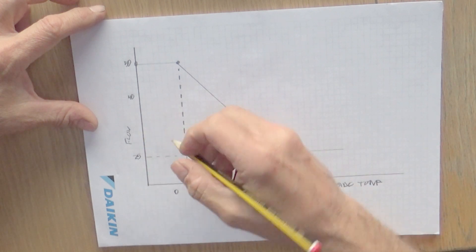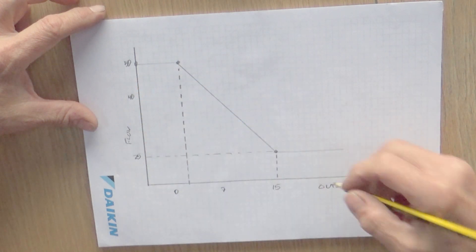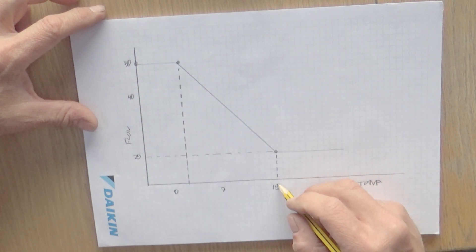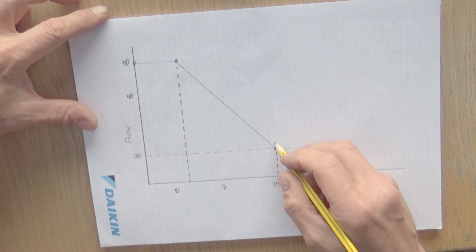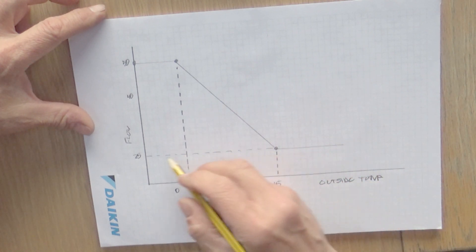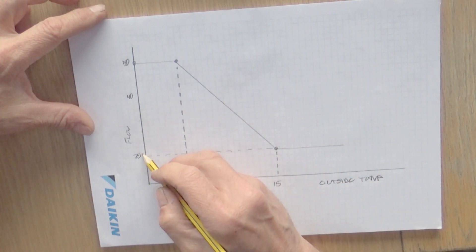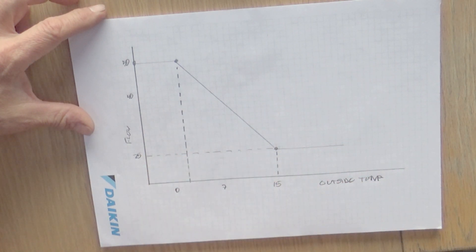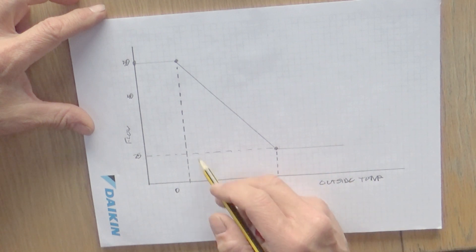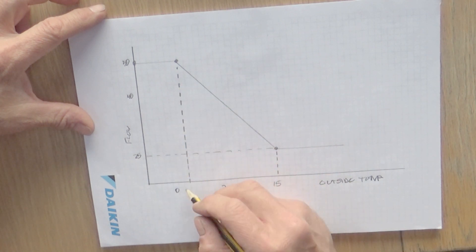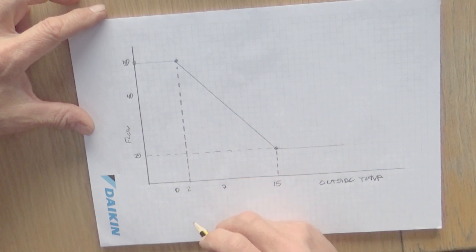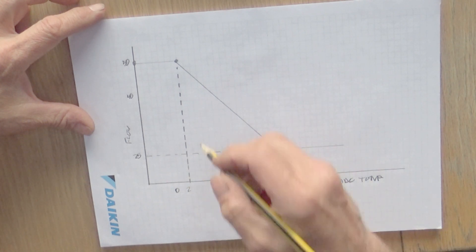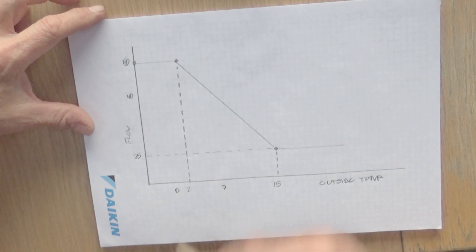For example, with a boiler, you could set a curve up so that when it's 15 degrees outside, a gas boiler could run at 25 degrees flow. And at the other end of the scale, when it's around two degrees outside, the boiler could run at 50.